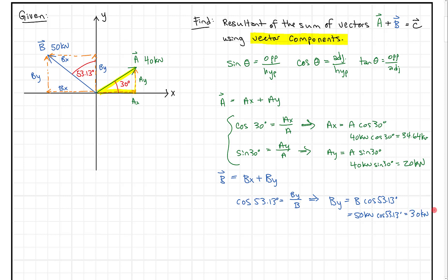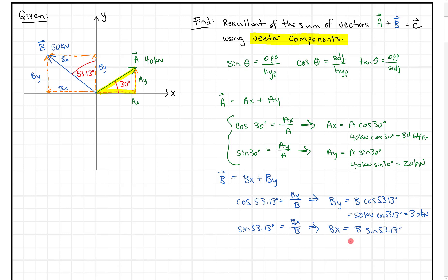Next, applying sine: the opposite of the 53.13-degree angle is BX. So sine of 53.13 equals BX over B, giving us BX equals B times sine of 53.13 degrees. Working that out, we get 40 kilonewtons.